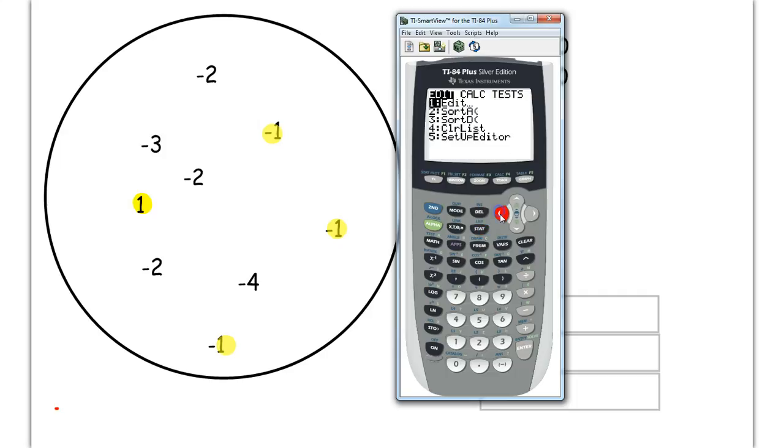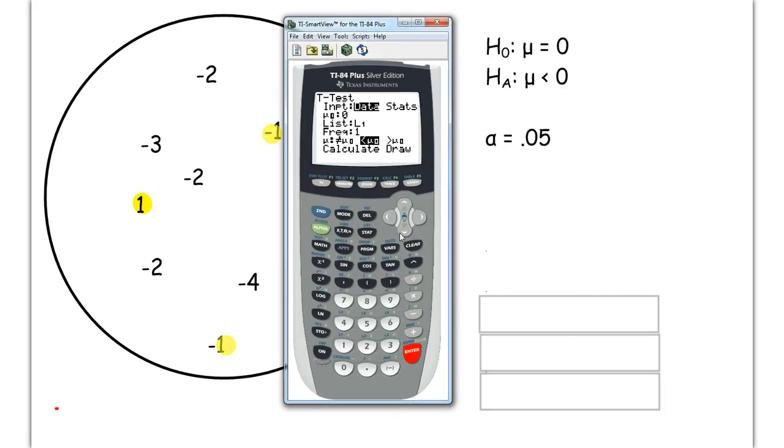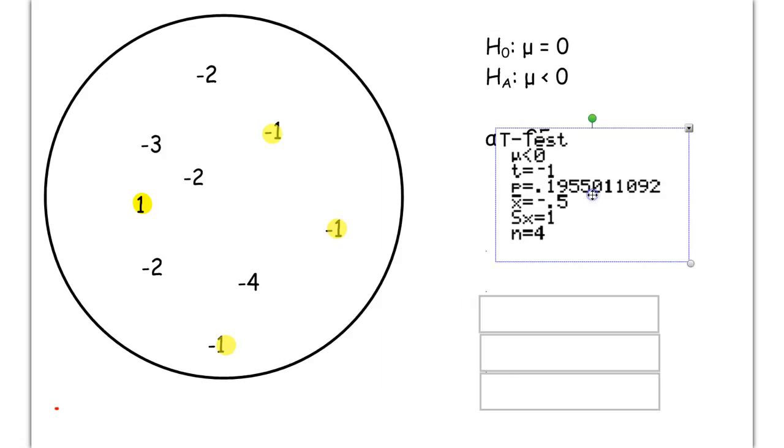And we're going to go to stat t-test. It should already be in data mode from before. Mu should already be set to 0. And the alternative should still be set to less. So you should literally have to do nothing at this screen if you're coming off the last slide.